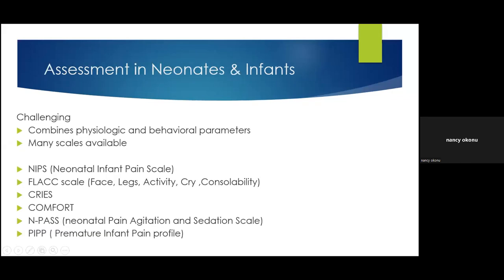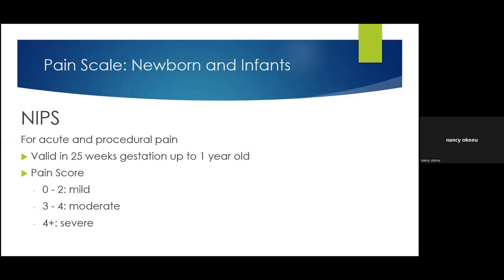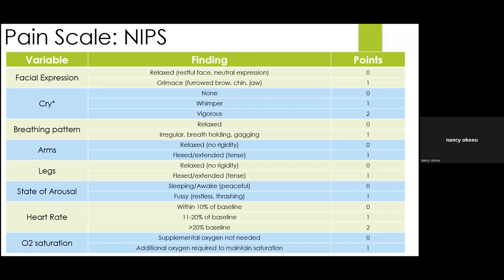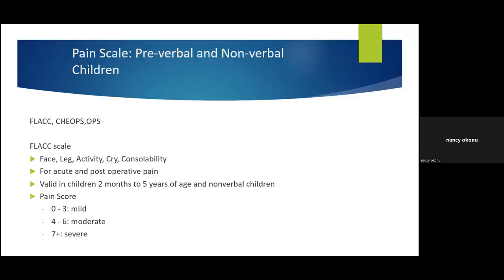For NIPS, you look at facial expression, cry, breathing pattern, arms, legs, state of arousal, heart rate, and oxygen saturation. A score of 0 to 3 indicates mild pain, 4 to 6 moderate pain, and 7 or above severe pain. For mild pain, non-pharmacological means such as feeding, cuddling, and swaddling can be used. For moderate and severe pain, pharmacological methods are needed. The FLACC scale is used for older children — toddlers — from two months up to five years, and also for cognitively impaired children, using a revised version (r-FLACC) that accounts for altered motor function in children with cerebral palsy.